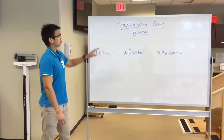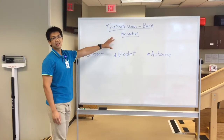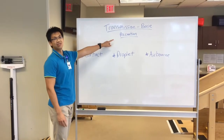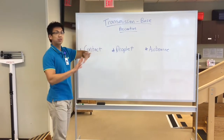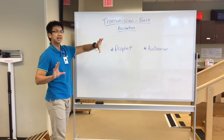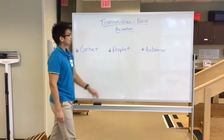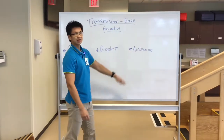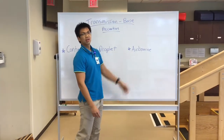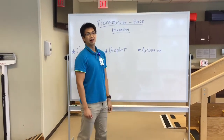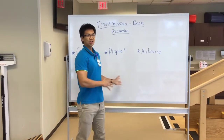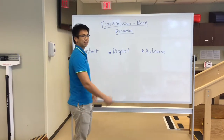Now, there are three different types of precautions that we have to watch out for when we're entering into the patient room, if we actually see the sign outside. These are going to be: contact, droplet, and airborne. You're probably wondering what all three of these mean.